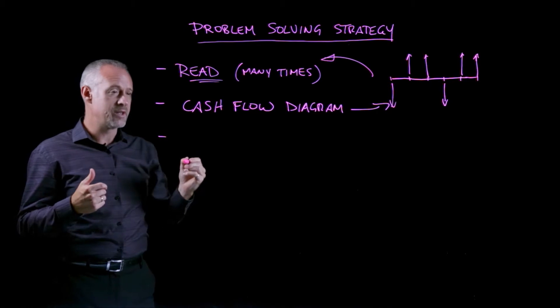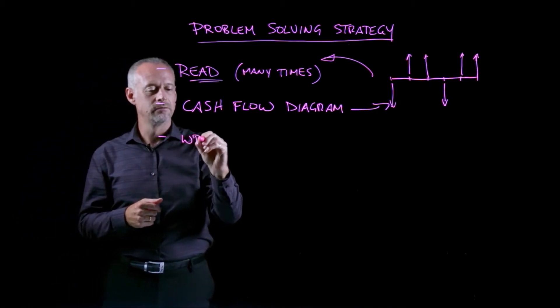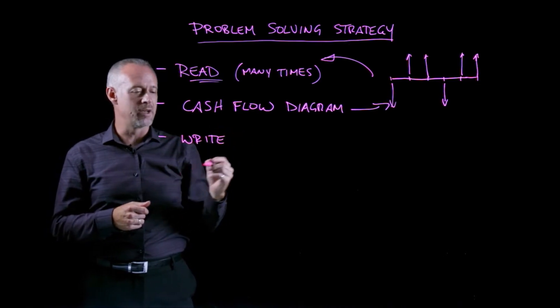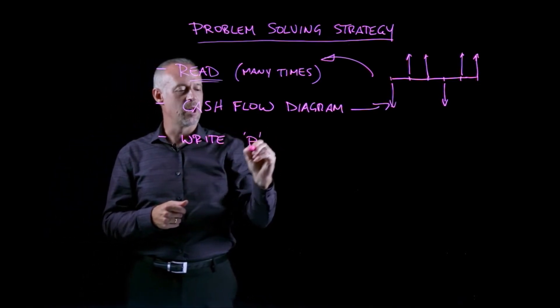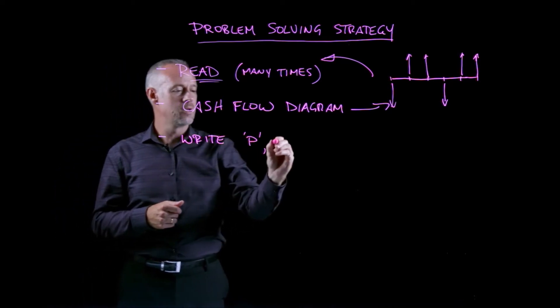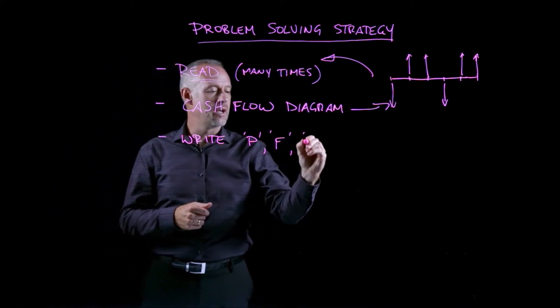Third step I'd recommend is try to write down, write the variables that you can identify. So, for instance, a P, a value occurring in the present, an F, an A.